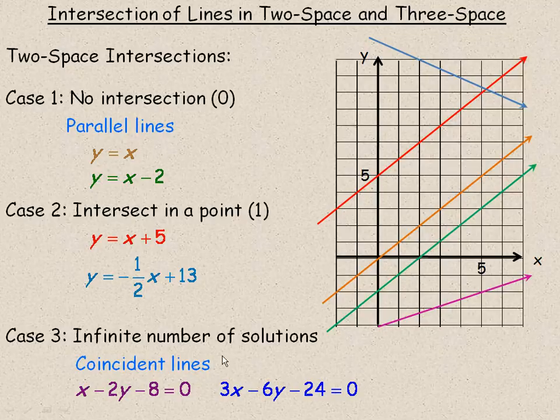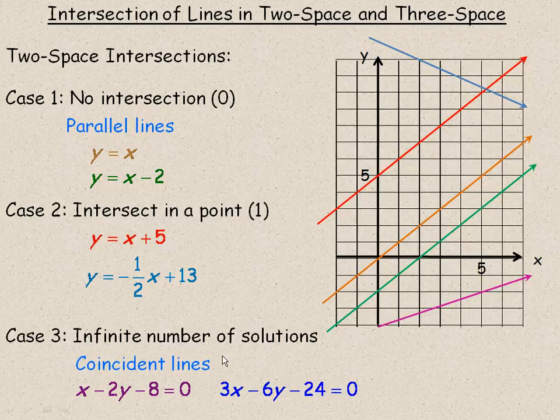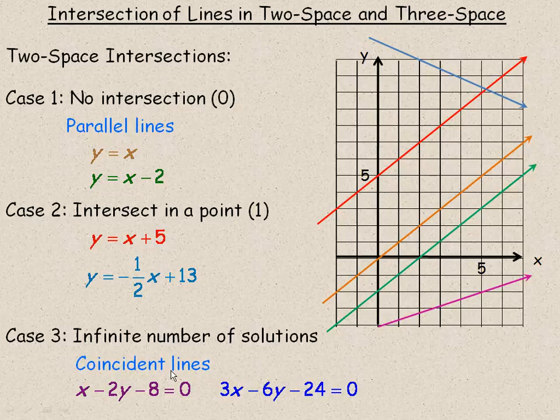Case number 3, the two lines could have an infinite number of solutions, an infinite number of intersection points. And they're called coincident lines, which means really that they are the same line.